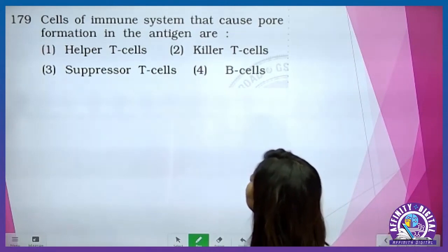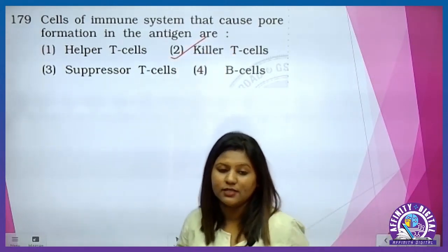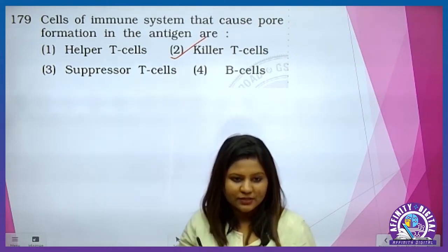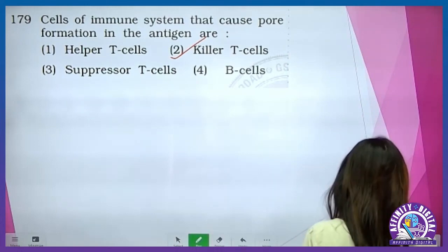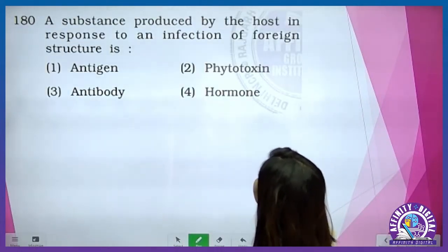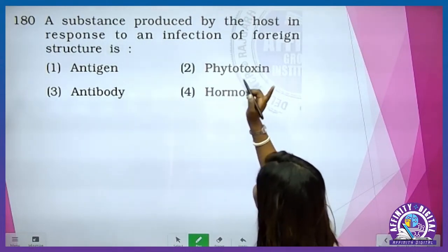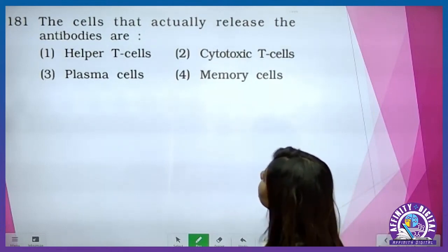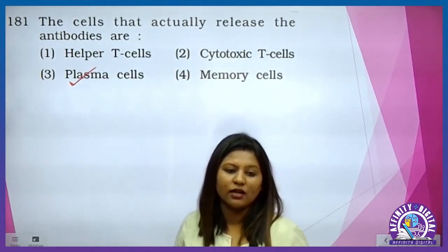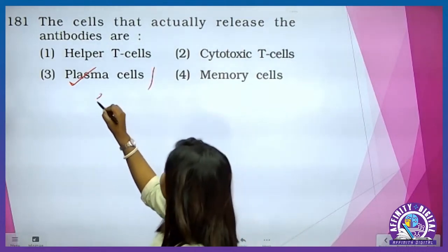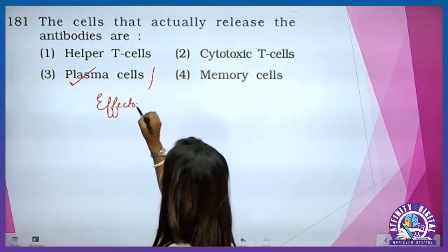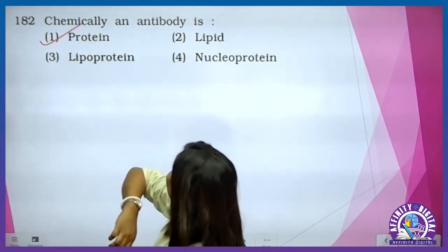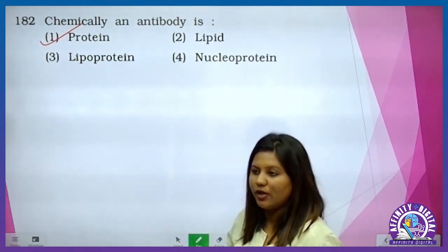The cells that actually release the antibodies are the plasma cells. Plasma cell is a kind of B cell — it is also known as effector cell. Chemically an antibody is a protein — basically they are glycoprotein, however book mein jo diya hua hai it is protein.